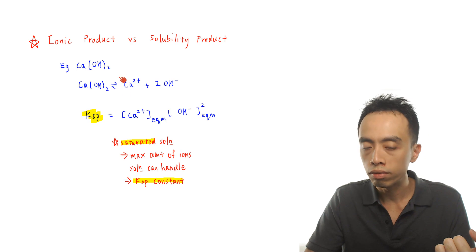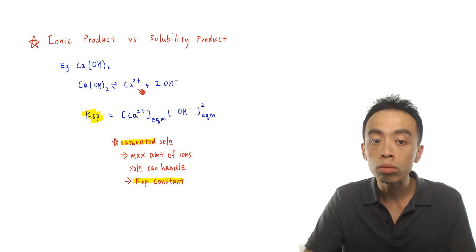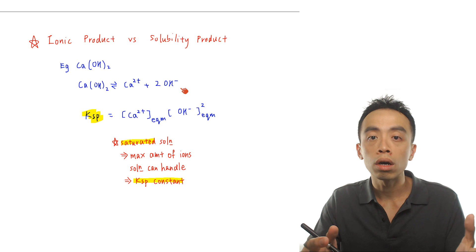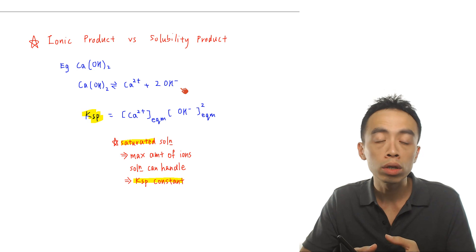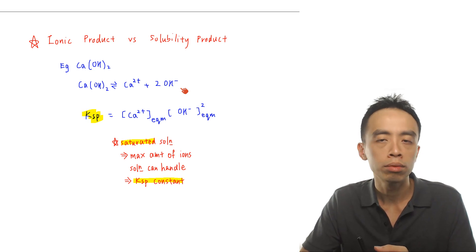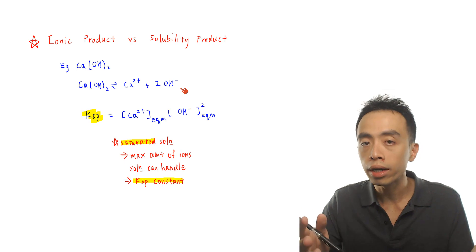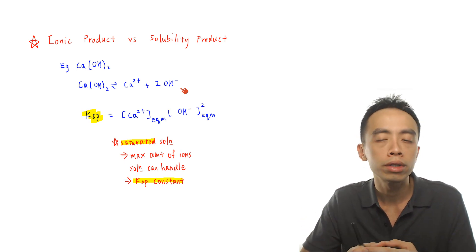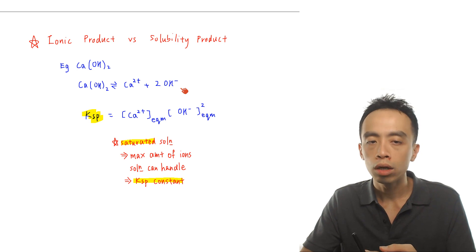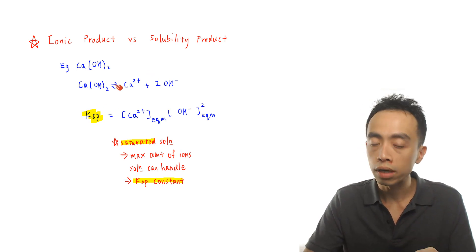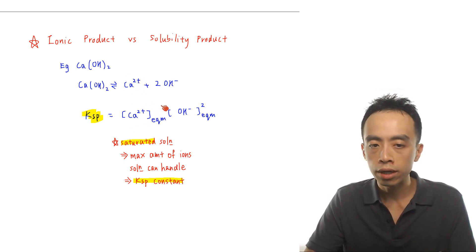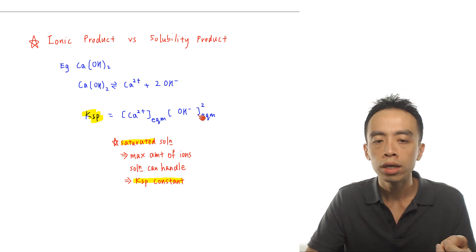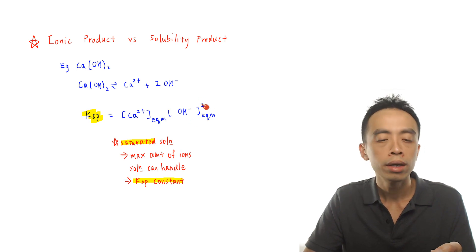So this gives us Ca(OH)₂ ⇌ Ca²⁺ + 2OH⁻. Now in terms of writing down the equilibrium constant or solubility product, it is straightforward because we know that an equilibrium constant is an expression in terms of the concentration of the products raised to the power of the coefficient over the concentration of the reactants raised to the power of the coefficient. So the Ksp for the dissociation of calcium hydroxide will be the concentration of Ca²⁺ to the power 1, multiplied by the concentration of OH⁻ squared, because the coefficient for OH⁻ is 2.